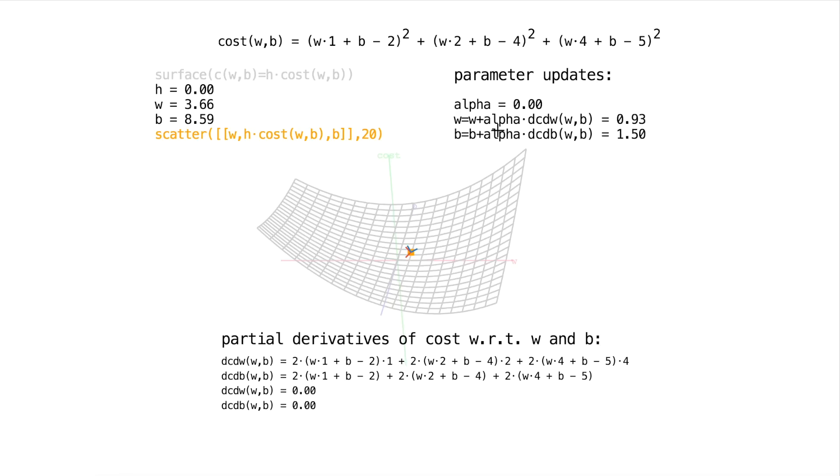So, if you use 0.93 for w and 1.5 for b in your model, you will have the best fit of the data. And your predictions will be as good as they could be given the amount of data that you've used to train on. So, that's about it for this video.